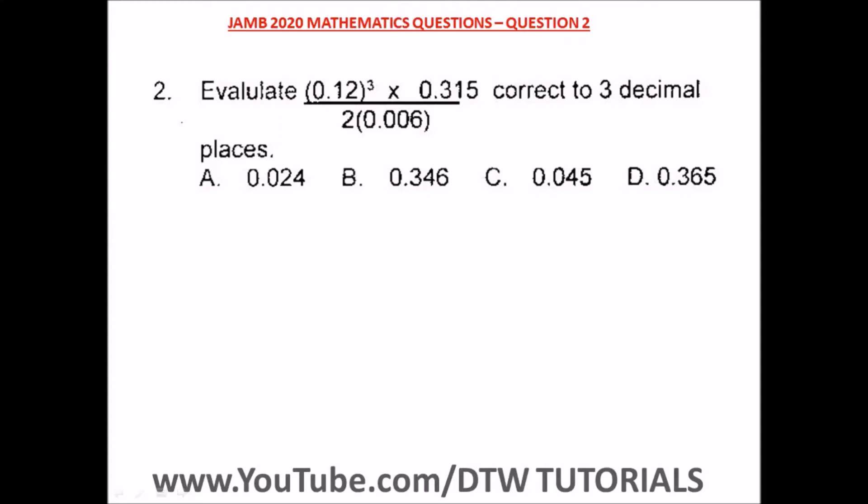Number two of our JAMB 2020 question, which is math. We are asked to evaluate (0.12)³ times 0.315 over 2(0.006), correct to three decimal places. Let's not forget.